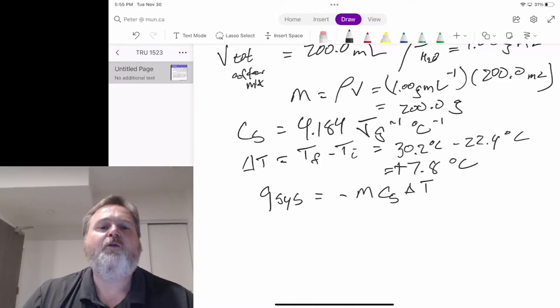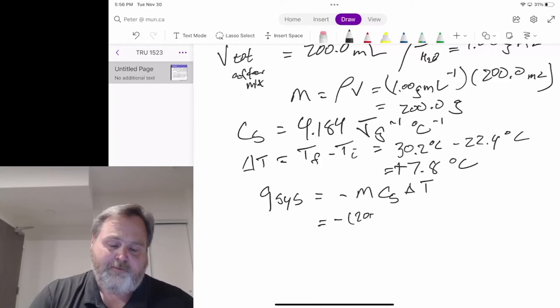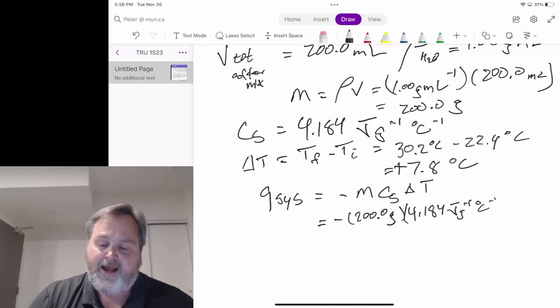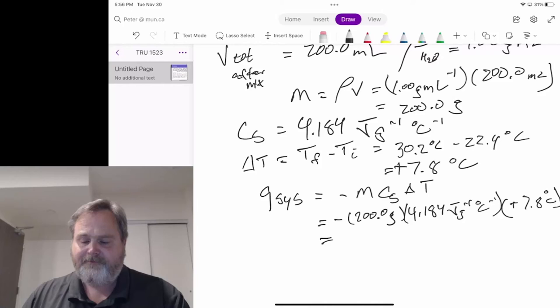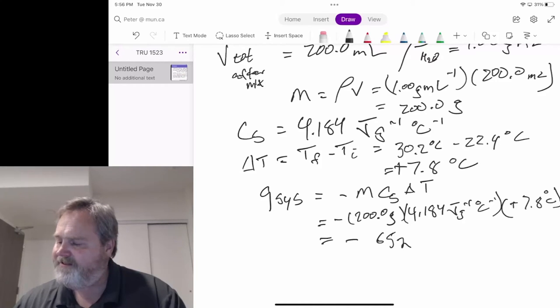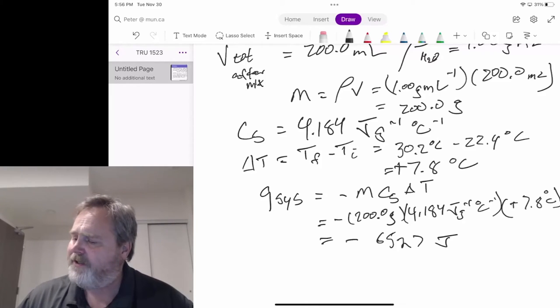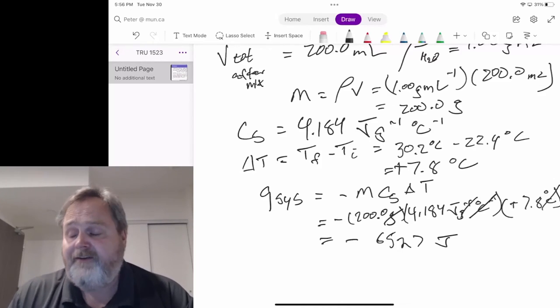We see a lowering of the total energy content of the system. How much in this case? That's going to be minus 200.0 grams, our 4.184 joules per gram per degree Celsius, and our plus 7.8 degrees Celsius. That's minus 6,527 joules. This per degree Celsius cancels out that degree Celsius, this per gram cancels out that gram. We're left with units of joules.